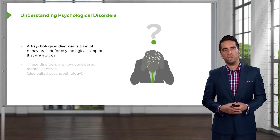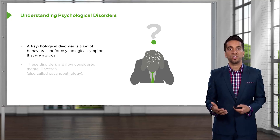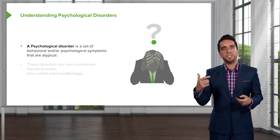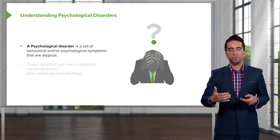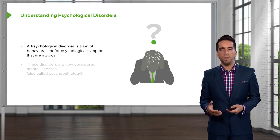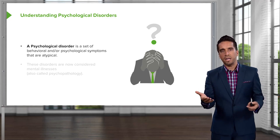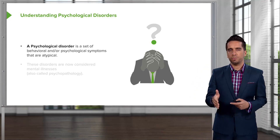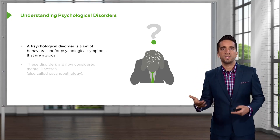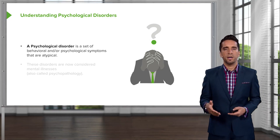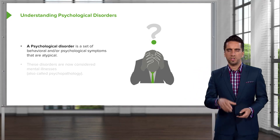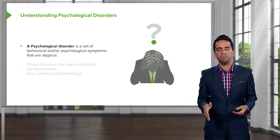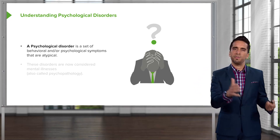What are we defining as a psychological disorder? It's a set of behavioral and/or psychological symptoms that are atypical — meaning they're different from the cultural or societal norms around us. This is where things get a little gray, because how do you define normal or what is typical? Based on specific disorders, we do have a fairly clear understanding of things that differ from the norm.